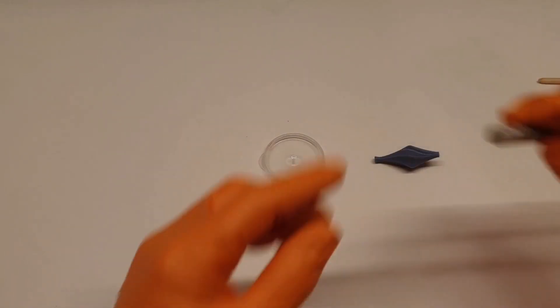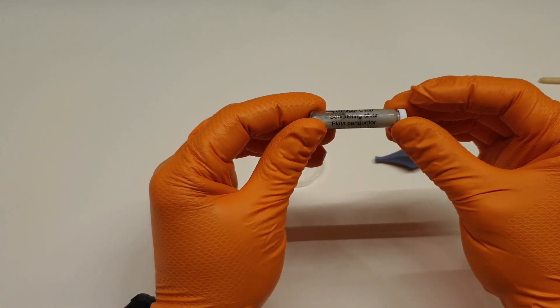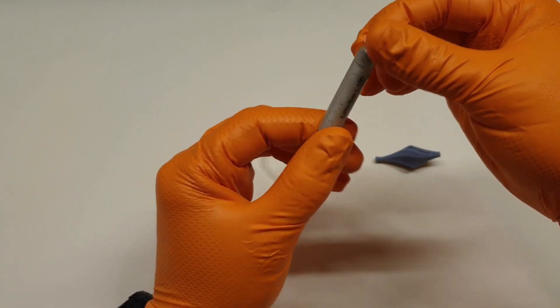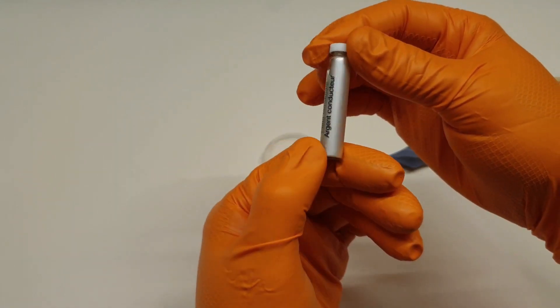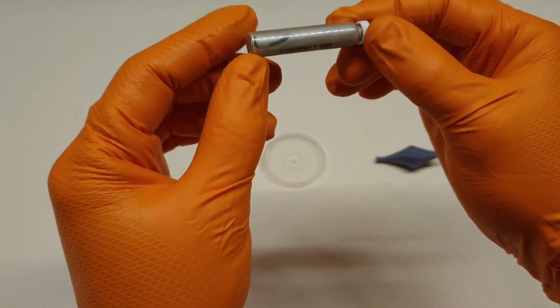Any electroplating process requires that the surface of the object that you wish to plate be electrically conductive. The vast majority of 3D printing plastics are not electrically conductive. There are two methods I'll show you to make the surface of your 3D printed part conductive so it can be electroplated.